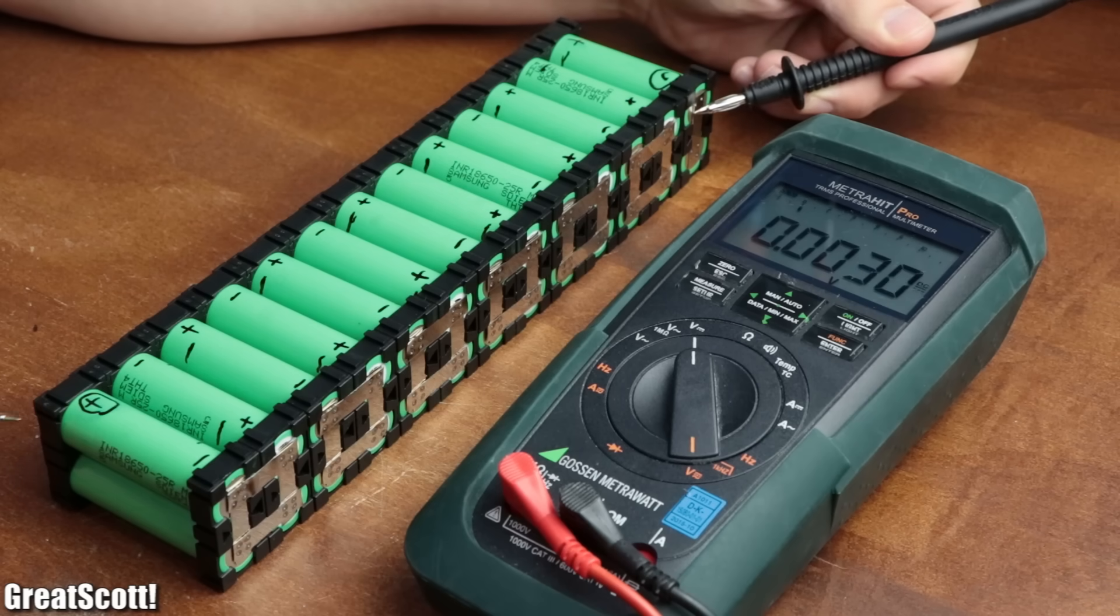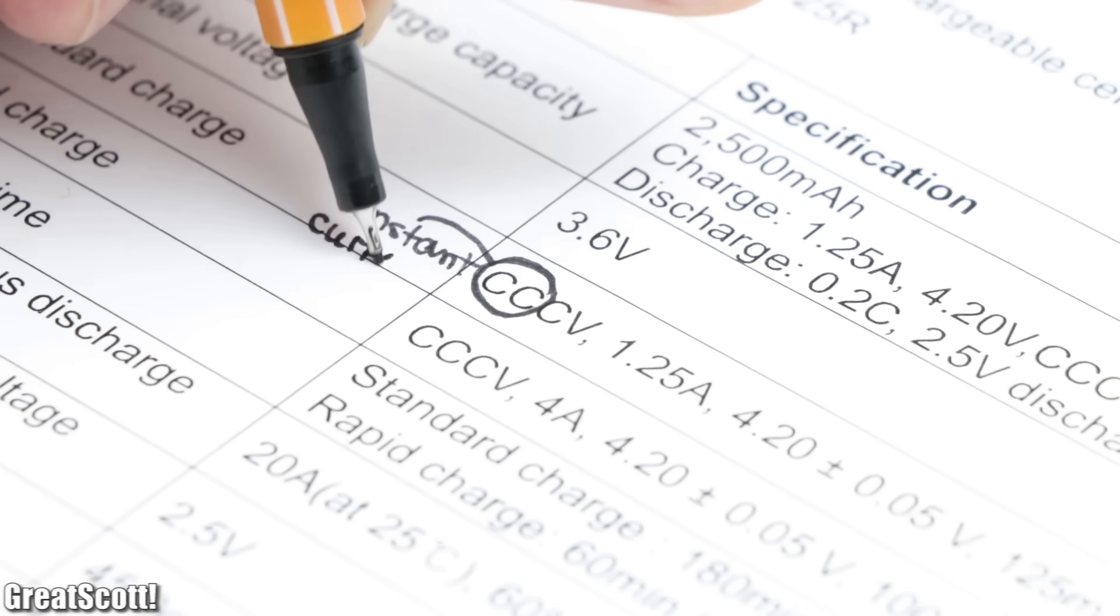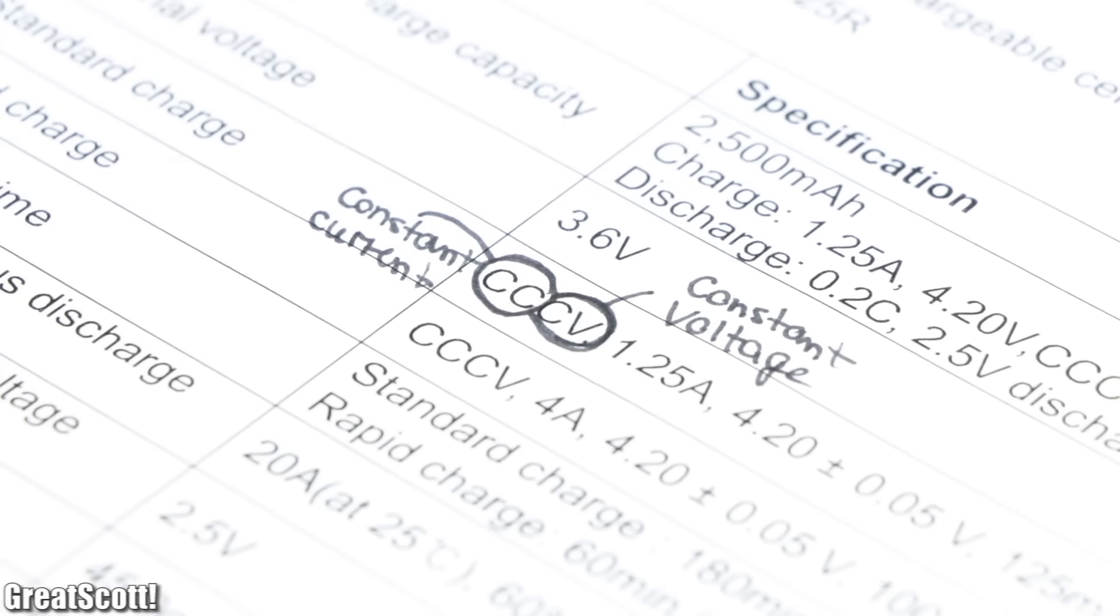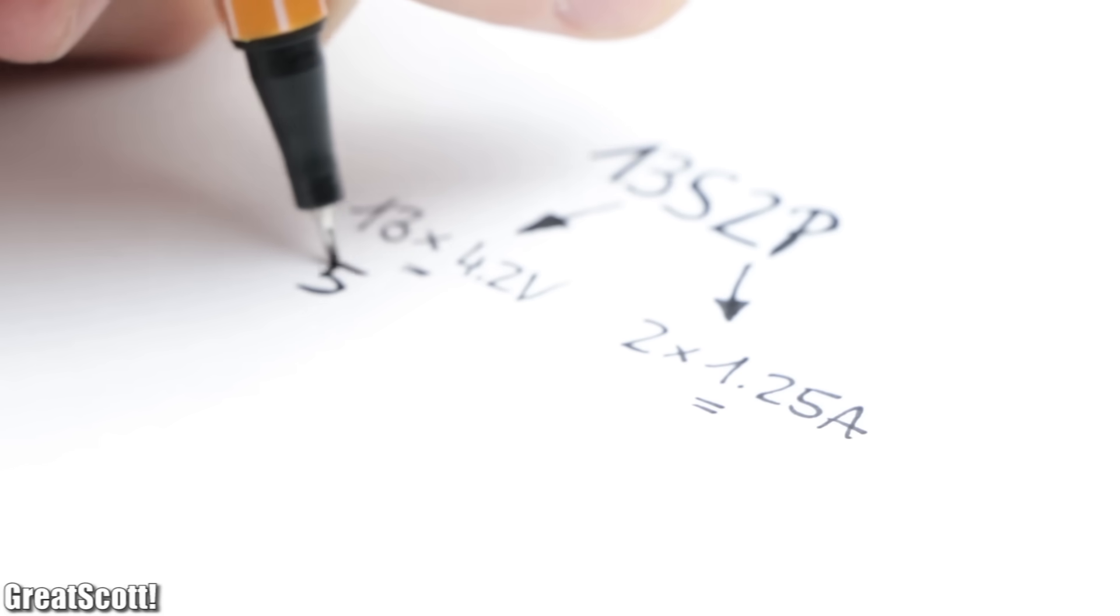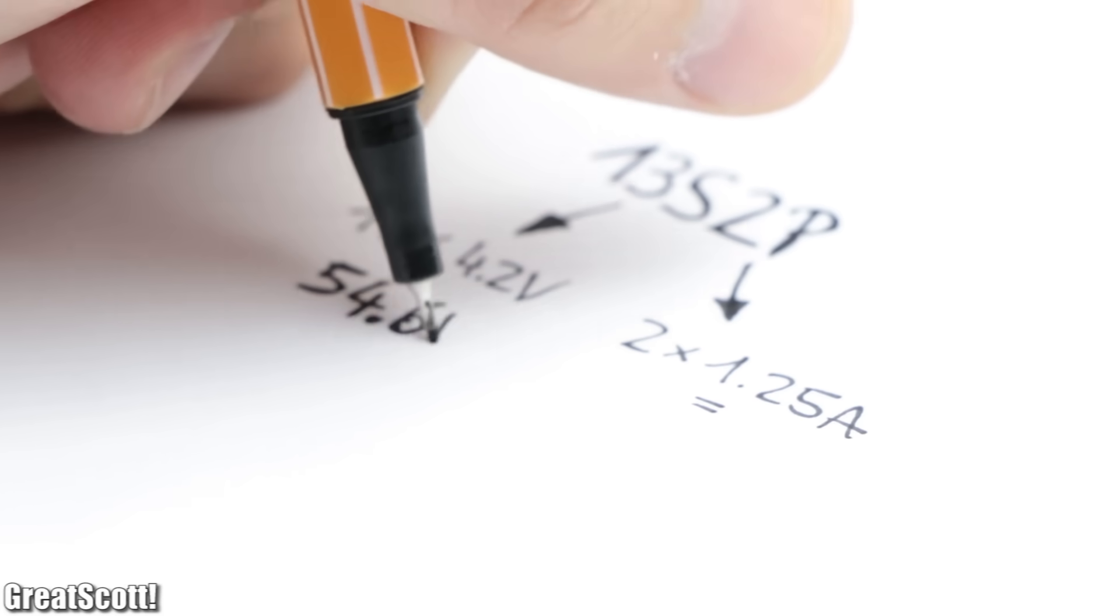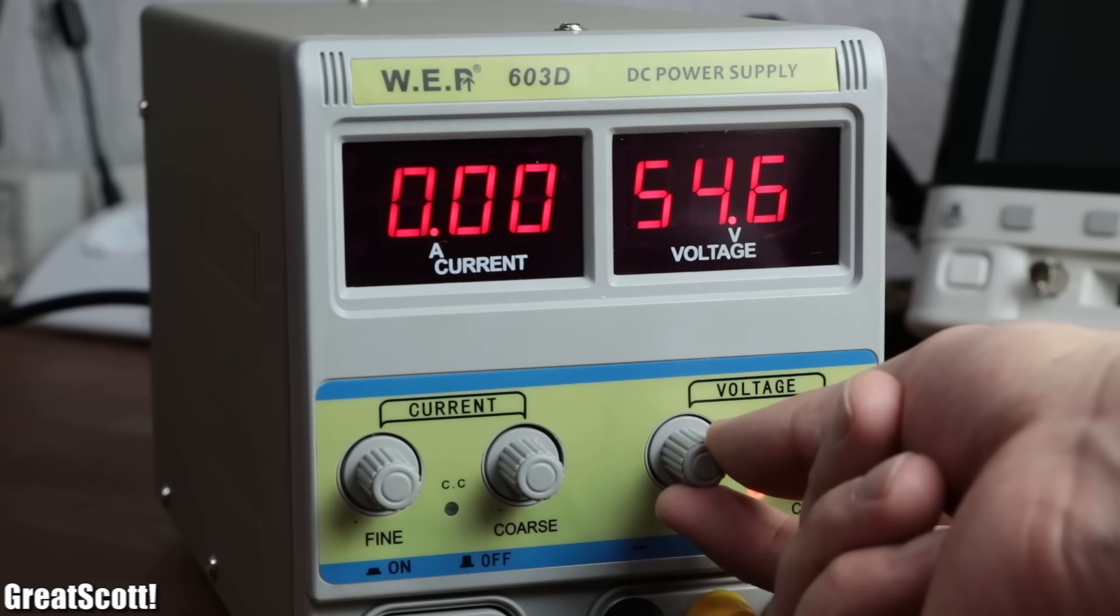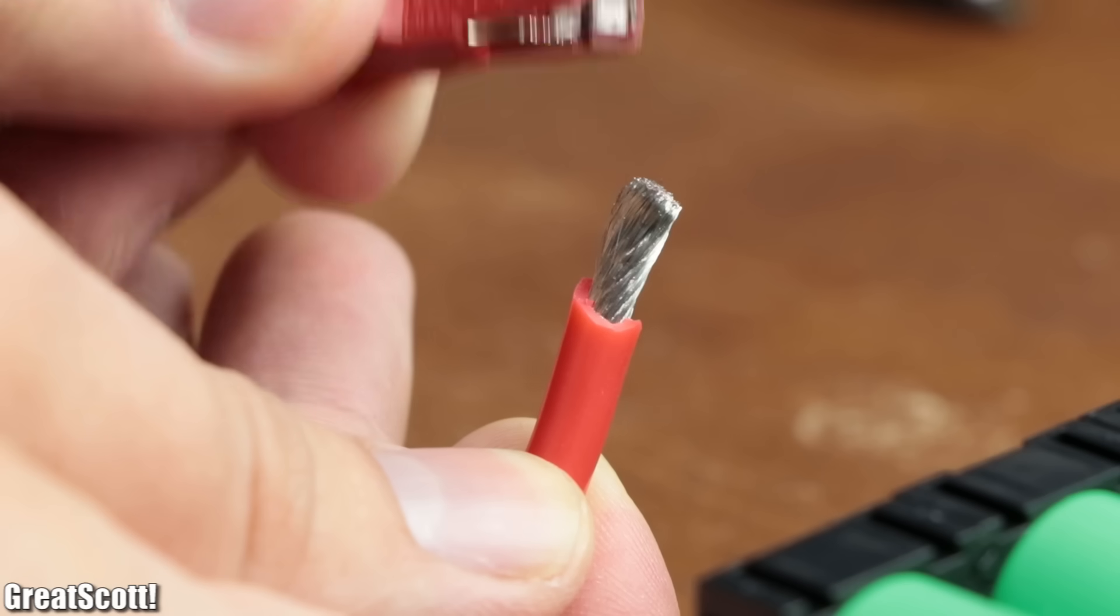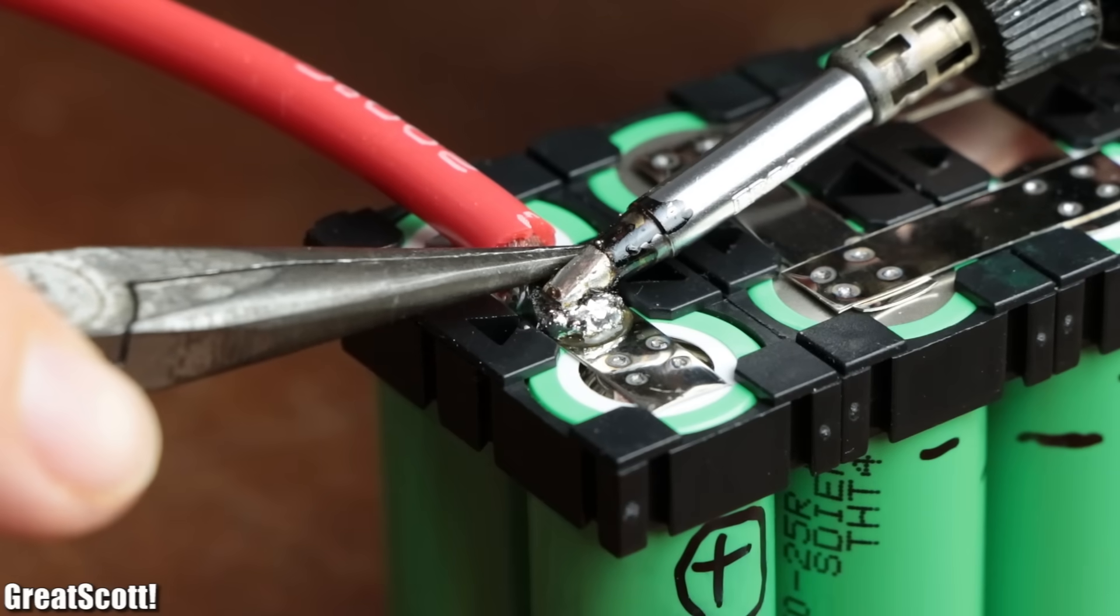The only remaining question is how to charge it up. The data sheet of our utilized lithium-ion cells states a constant current constant voltage method with 1.25 amps and 4.2 volts. If we multiply those values for the 13s2p battery pack, we would get 54.6 volts and 2.5 amps. This means I can set my lab bench power supply current limit to 2.5 amps, the voltage limit to 54.6 volts, and simply hook it up to the battery terminals to which I soldered thicker 10 AWG color-coded wire beforehand.